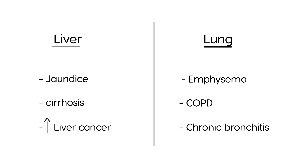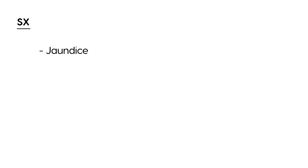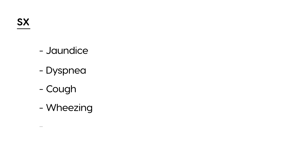Now let's talk about symptoms. The more classic symptoms of alpha-1 antitrypsin deficiency are respiratory symptoms like difficulty breathing, cough, and wheezing. Also, recurrent pulmonary and respiratory infections can be part of the symptomatology, along with jaundice from liver involvement.